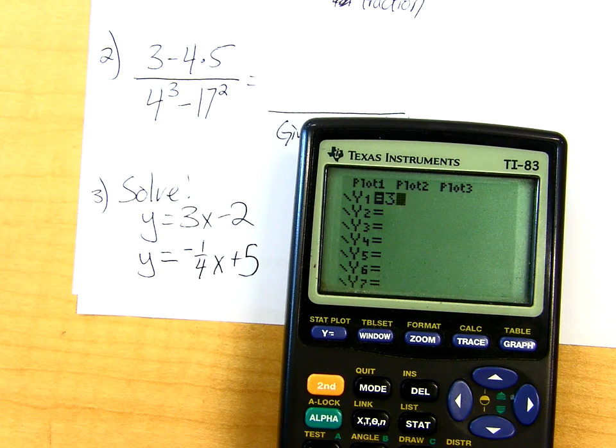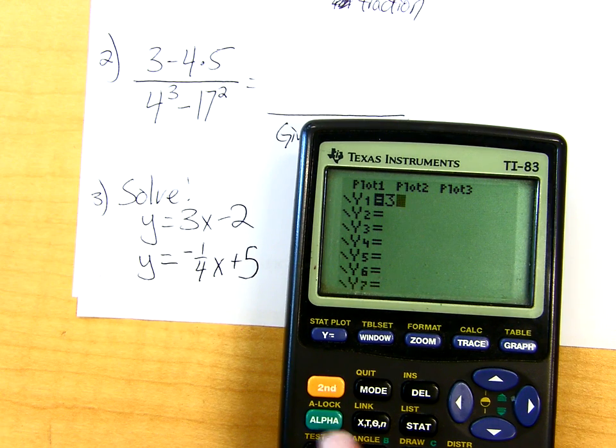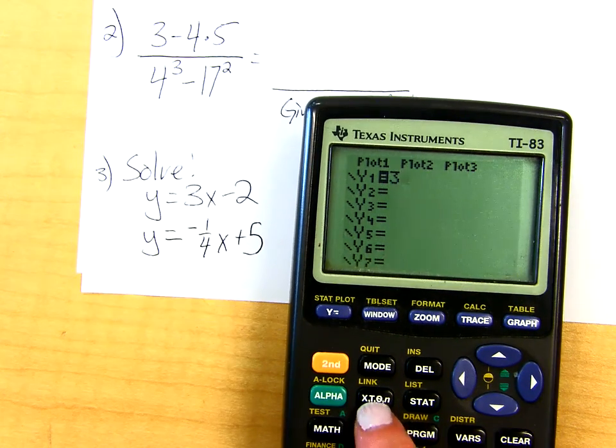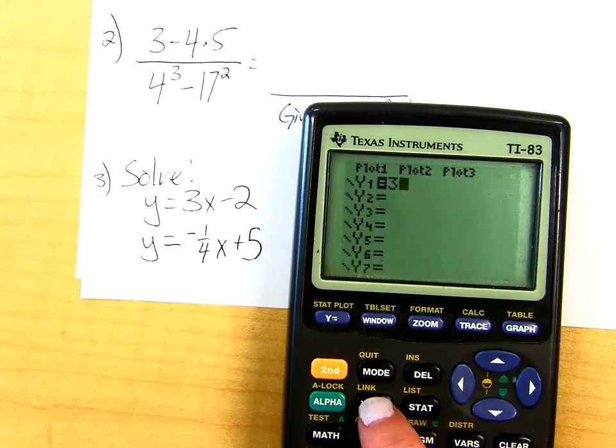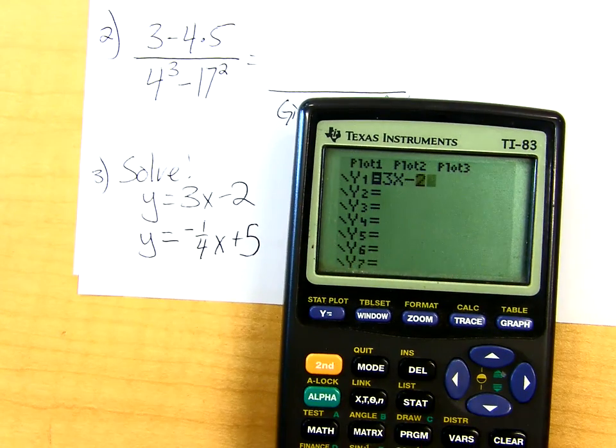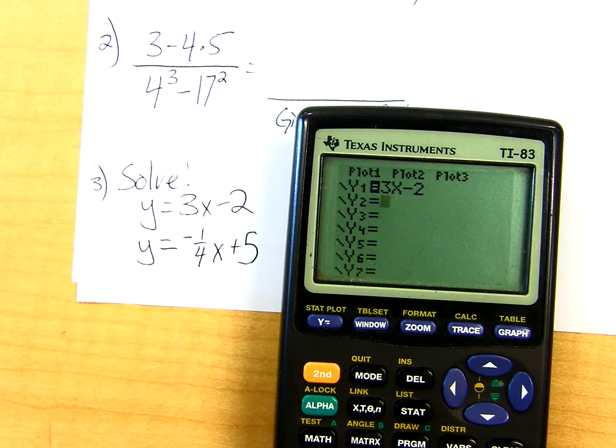And then I just type in the two equations. 3, and then where's the X button? It's right next to the green alpha key. So that's the button that we use for X. 3X minus 2, and then use your arrow key to go to the second one.